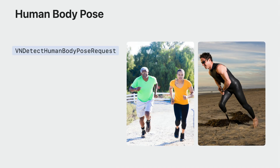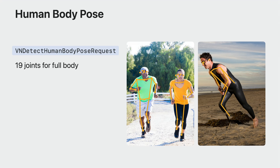But before I dig into that, let's talk about poses. Three years ago, Vision introduced Human Body Pose to detect human poses. The request generates a collection of human body landmarks by detecting up to 19 body joints. Developers around the world use the API to create many useful applications for health, fitness, etc. And since Vision interacts with the real world, we don't only care about humans — we also care about animals.